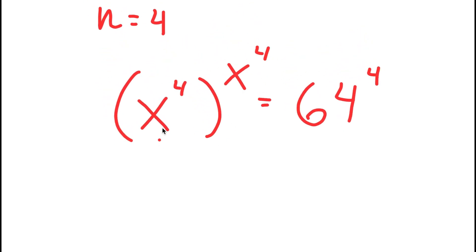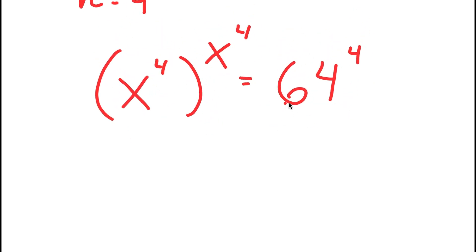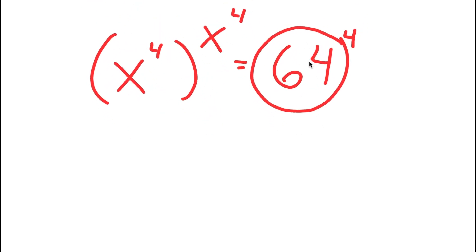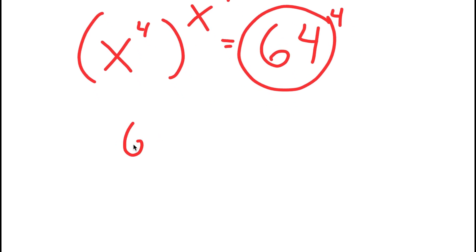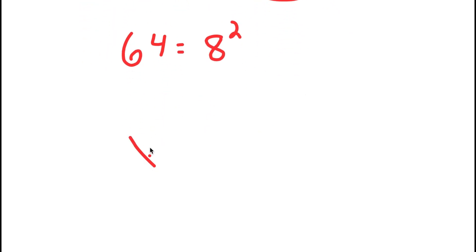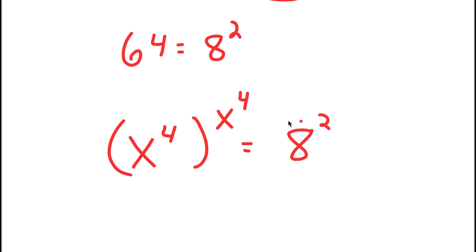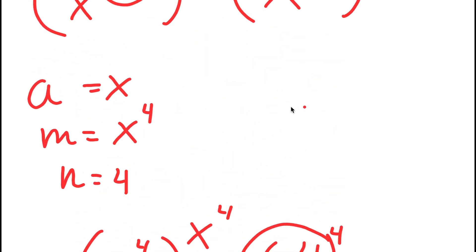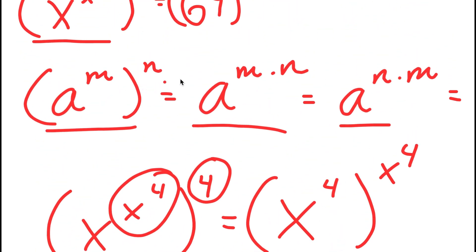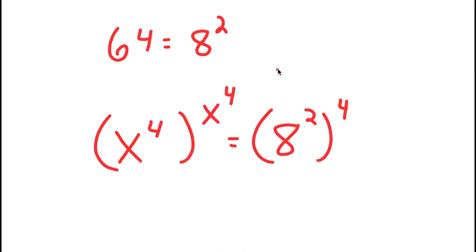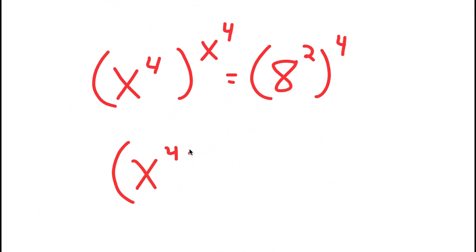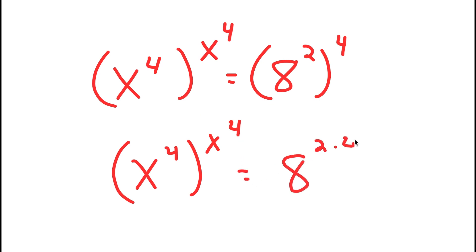You'll see why I did this in just a minute, but first we have to rewrite 64. So 64 is the same thing as 8 squared, so I'm going to plug in 8 squared for 64 and get x to the power of 4 to the power of x to the power of 4 is equal to 8 squared to the power of 4. Using the rule that a to the power of m to the power of n equals a to the power of m times n, 8 squared to the power of 4 becomes 8 to the power of 2 times 4, which is 8 to the power of 8.